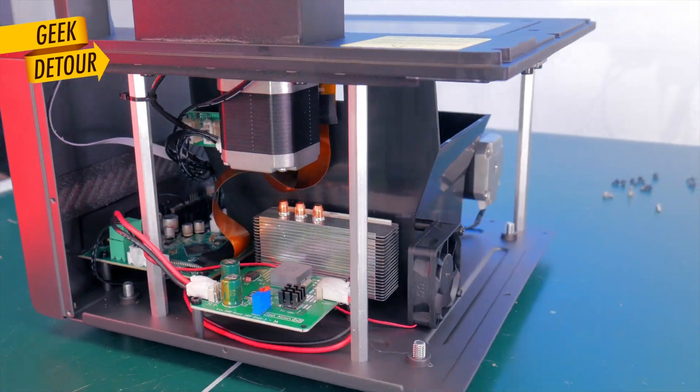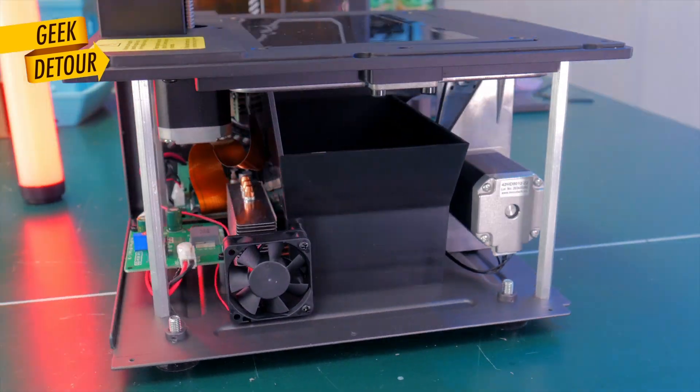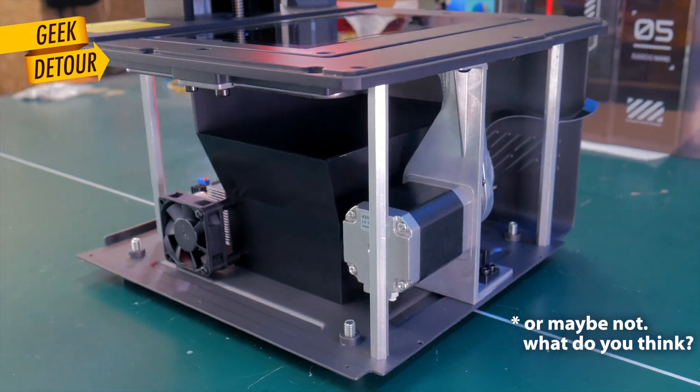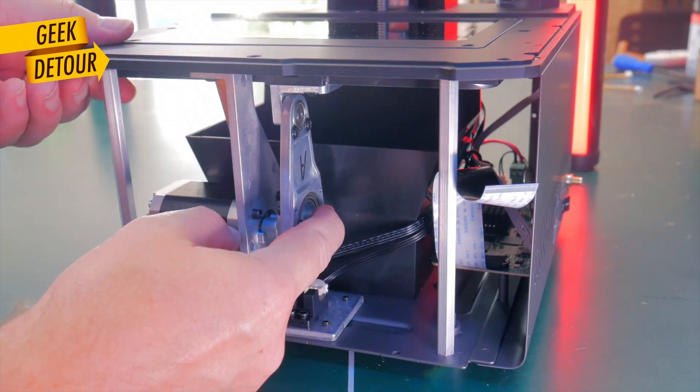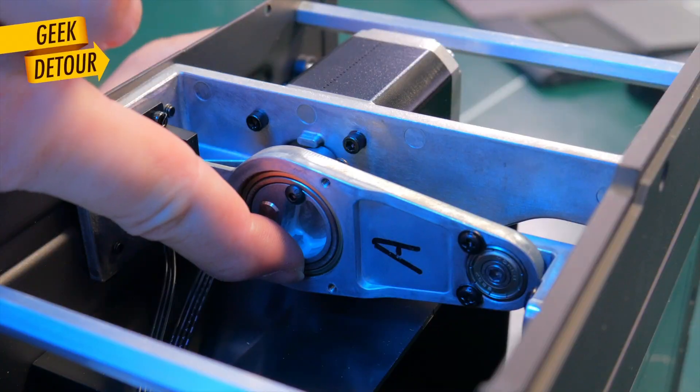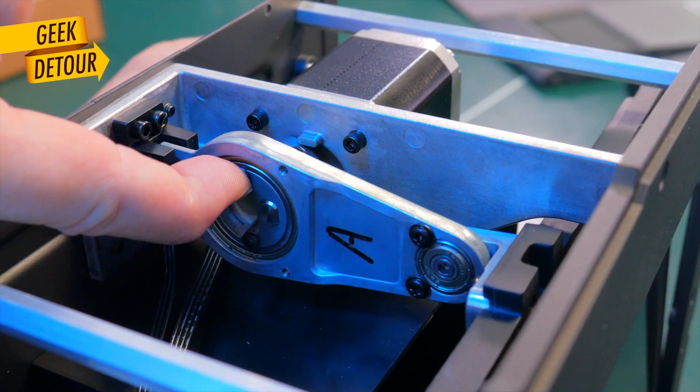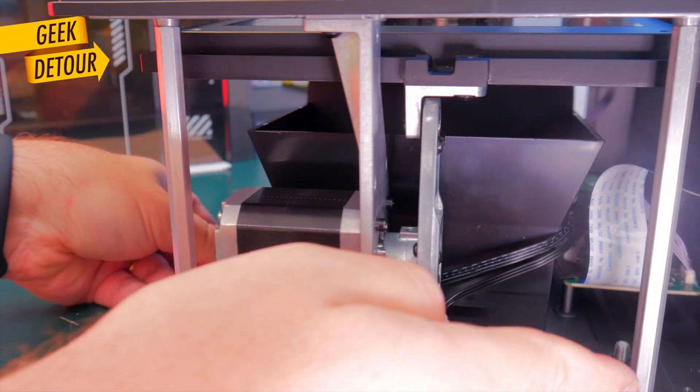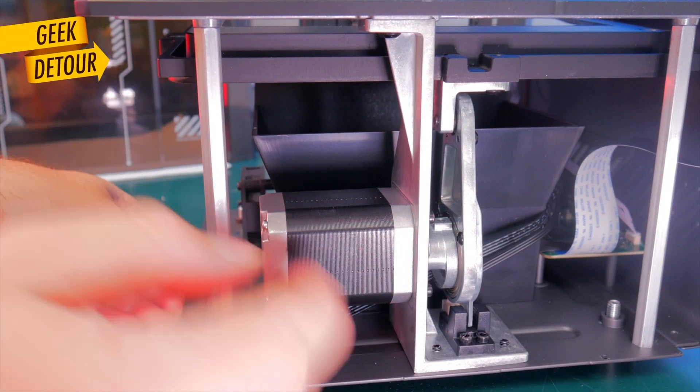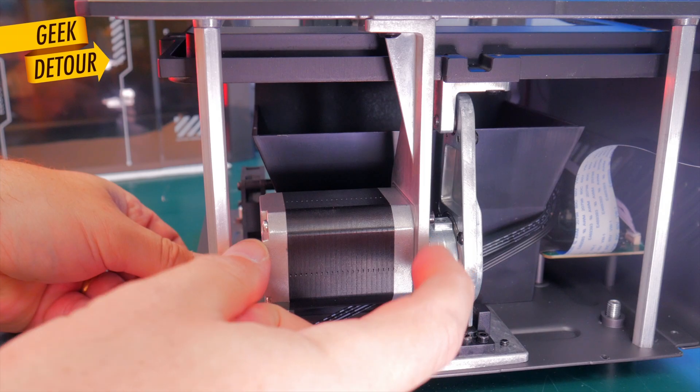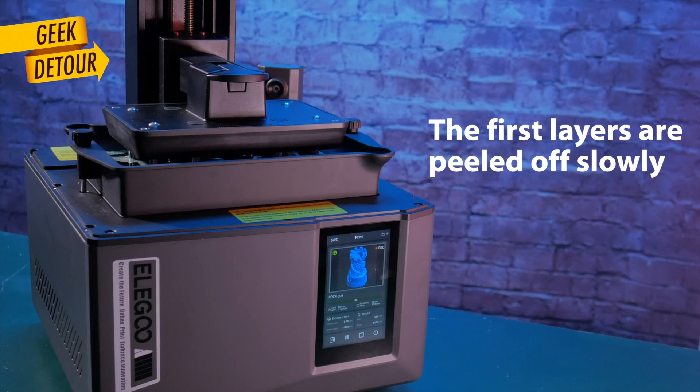The printer is quite easy to disassemble. And yeah, maybe they could fit everything tighter in a smaller printer. The tilt mechanism is very interesting. It uses two ball bearings and an eccentric axle to move up and down. The stepper motor that does this job is quite beefy and it makes sense because it needs the strength to peel off every layer.